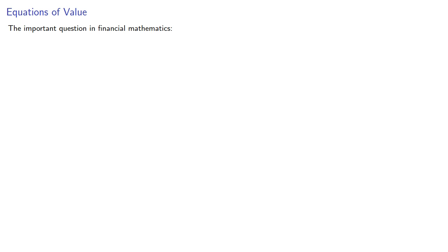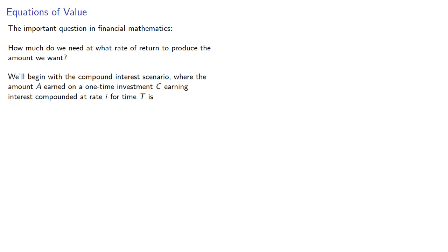The important question in financial mathematics: how much do we need at what rate of return to produce the amount we want? We'll begin with the compound interest scenario where the amount A earned on a one-time investment C, earning interest compounded at a rate I for time T is given by formula, and we know there are four quantities of interest. The initial amount C,